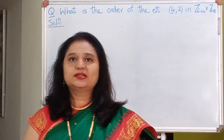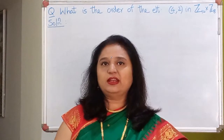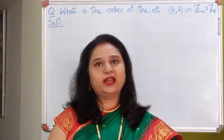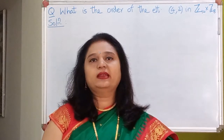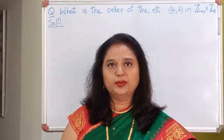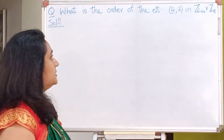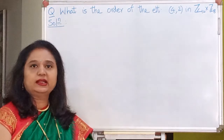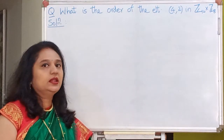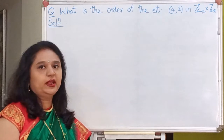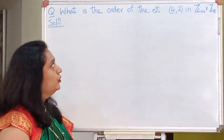Hello dear students. In the last lecture we have seen the definition of the direct product of groups and we have also seen one example. Now let's look at yet another example, but this time we will discuss the order of an element in the direct product of groups.